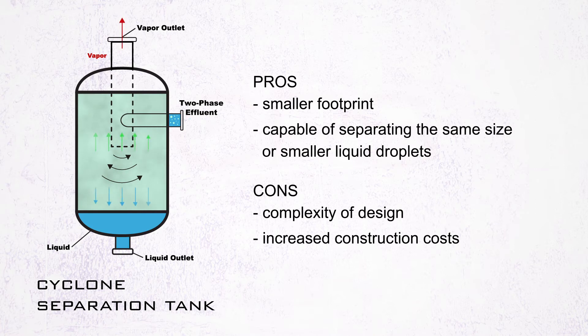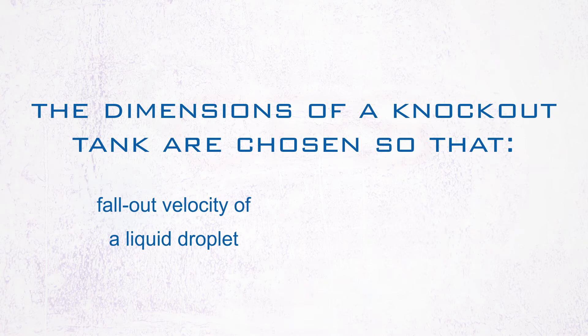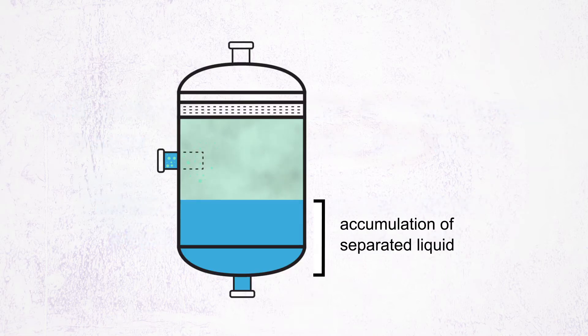Regardless of the type, the dimensions of a knockout tank are chosen so that the fallout velocity of a liquid droplet is greater than the superficial velocity of the vapor, while providing enough volume for accumulation of the separated liquid.